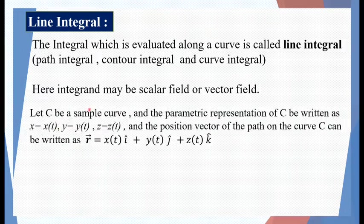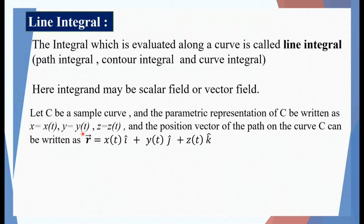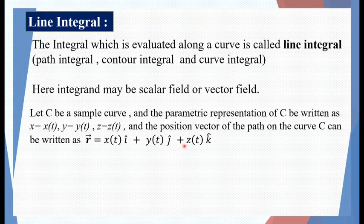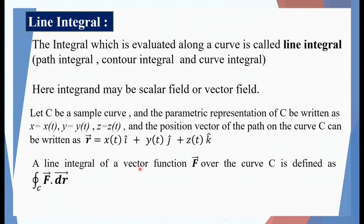Let capital C be a simple curve and the parametric representation of C be written as x is a function of t, y is also a function of t, and z is also a function of t. The position vector of the path on the curve C can be written as vector r equals x(t)i plus y(t)j plus z(t)k. Then a line integral of a vector function vector F over the curve C is defined as the closed integral C of vector F dot vector dr.